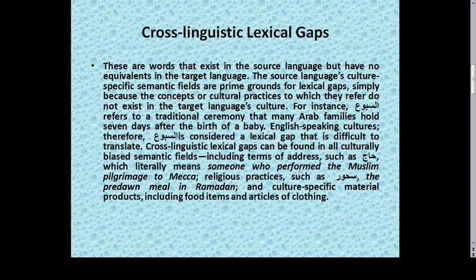Cross-linguistic lexical gaps can be found in all culturally biased semantic fields, including terms of address such as Hajj, which literally means someone who performed the Muslim pilgrimage to Mecca, religious practices such as suhoor — the pre-dawn meal in Ramadan — and culture-specific material products including food items and articles of clothing.